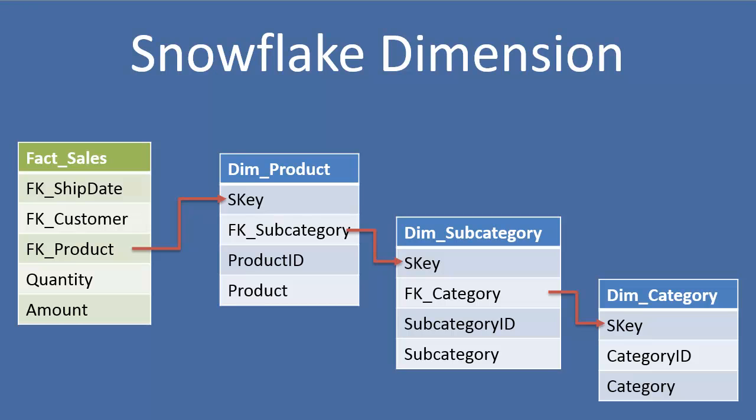You can see pretty easily here why it would be quite a bit more complicated to say filter this fact table by category. We have to first relate the sales to the dim product and then product to dim subcategory and then subcategory to dim category.